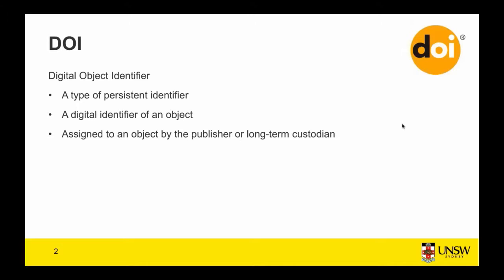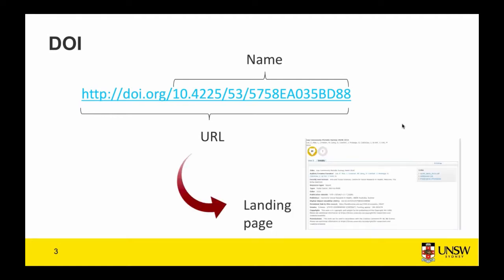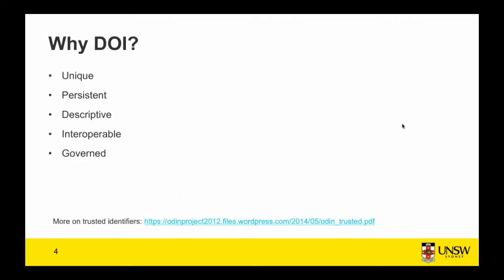A DOI - a digital object identifier - is a type of PID optimized for scholarly resources. Importantly, it's the identifier that is digital; the object can be digital or physical. DOIs are assigned to an object by the publisher or a long-term custodian, and the persistence of that identifier and the resource is managed by the organization and its policies. The DOI name itself is an alphanumeric string that can be converted to a URL by adding a DOI resolver like DOI.org. When that URL is entered into a browser it takes you to a landing page with human-readable metadata about the resource. Basic information about the resource is required to mint a DOI, and that metadata is both human and machine readable.